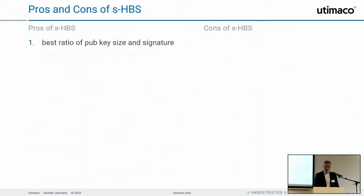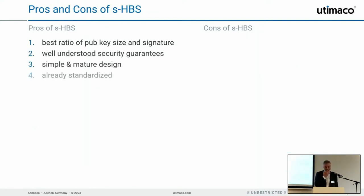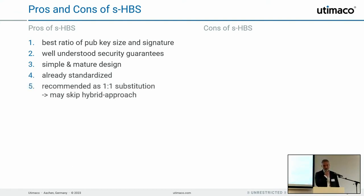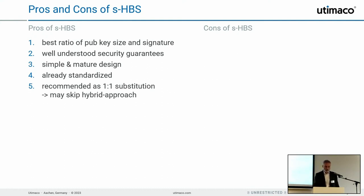For a summary of pros and cons: on the pro side, we have a very efficient mechanism in terms of signature and public key sizes. The algorithm has a very basic, well-understood structure, giving us a mature level of security. Typically nobody questions the security of hash-based signatures, because the underlying hash functions are very well designed and believed to be secure.